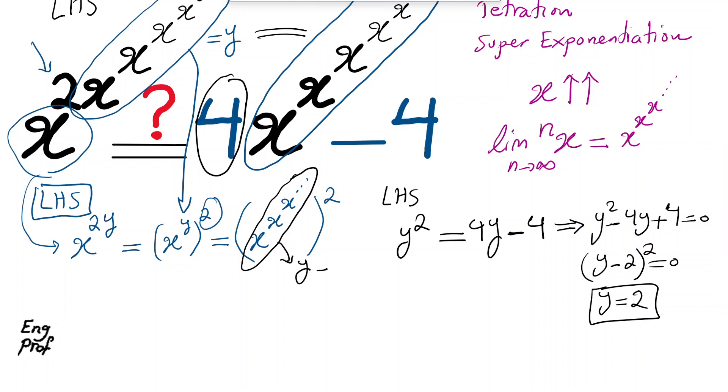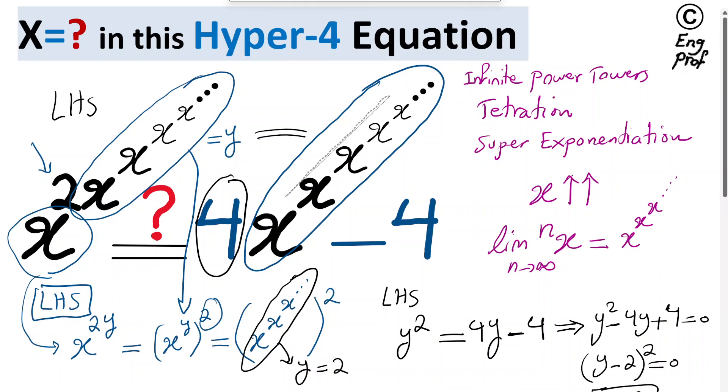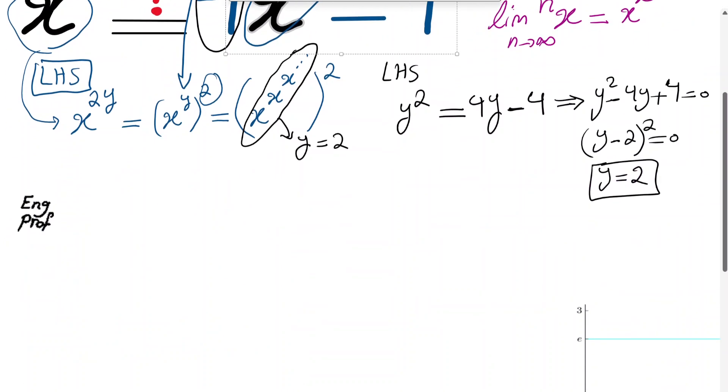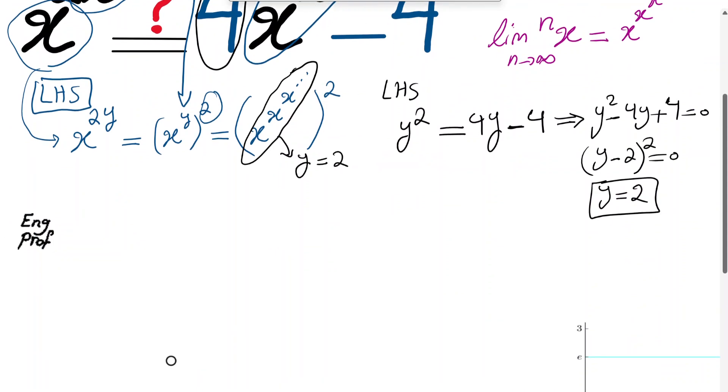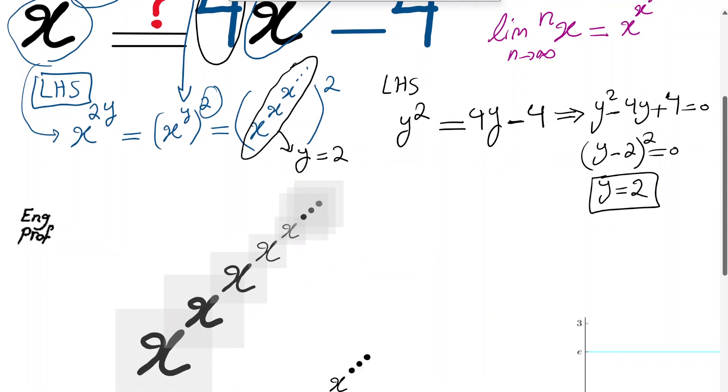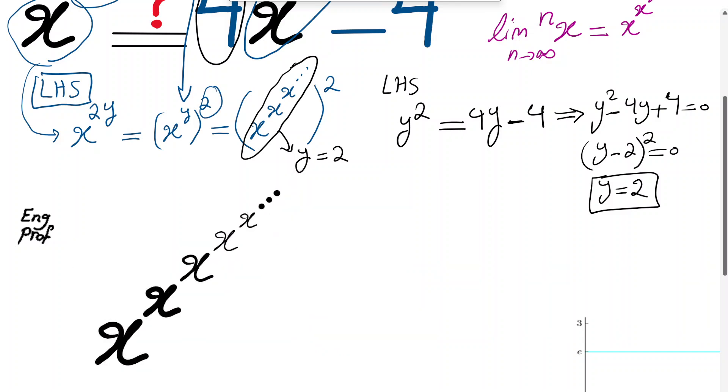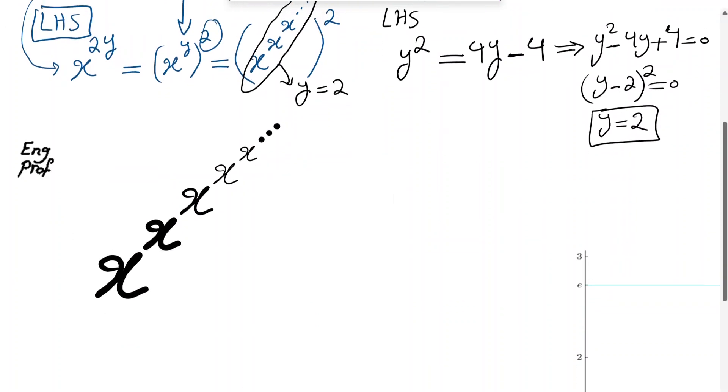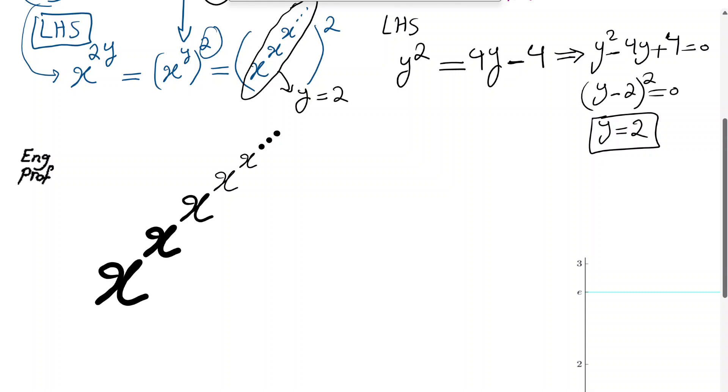So we got that this has to be equal to 2. Therefore, the only thing I need to do to solve this problem is setting this whole thing to, so let me make sure I'm not missing something. So I want to set this whole thing, which is equal to y. So this whole thing is equal to y. And I want to set that equal to 2, because I just got that it has to be 2.